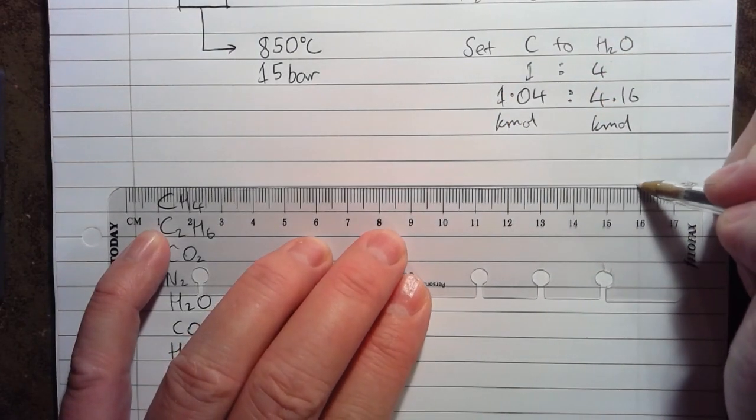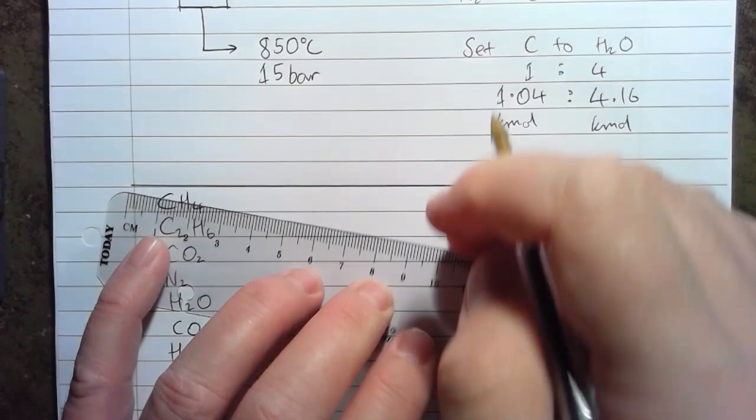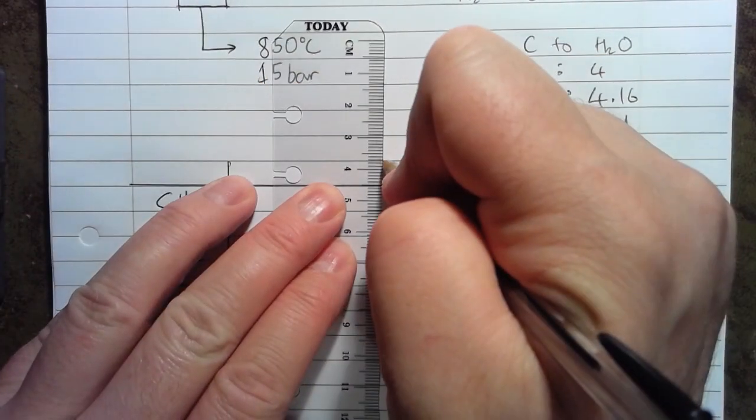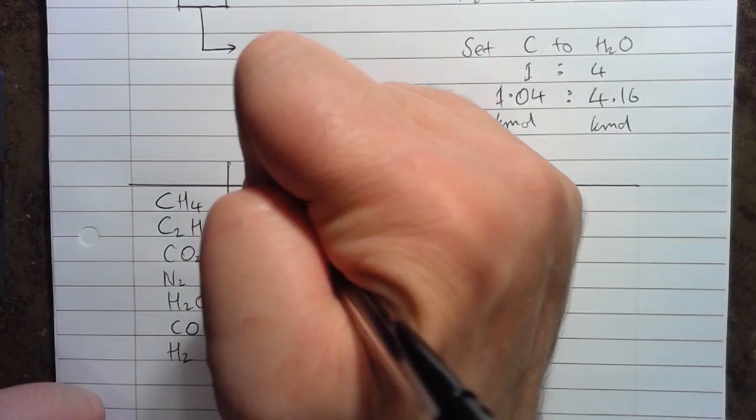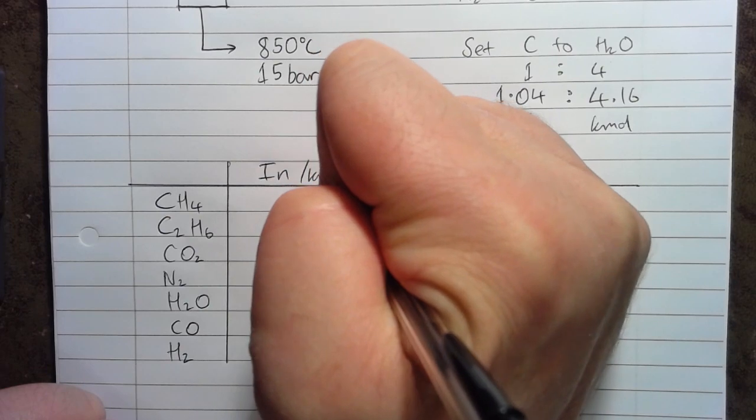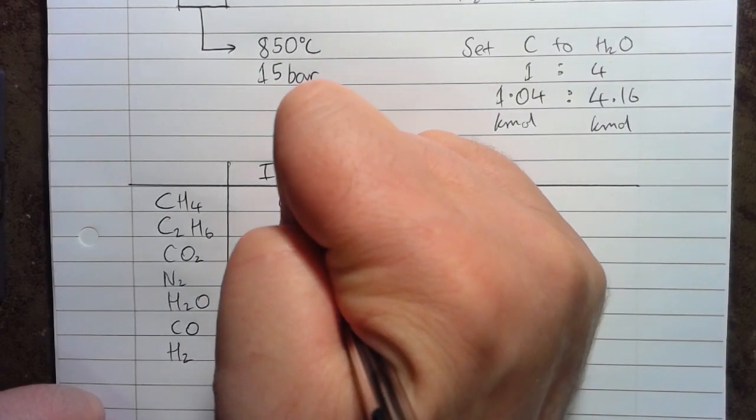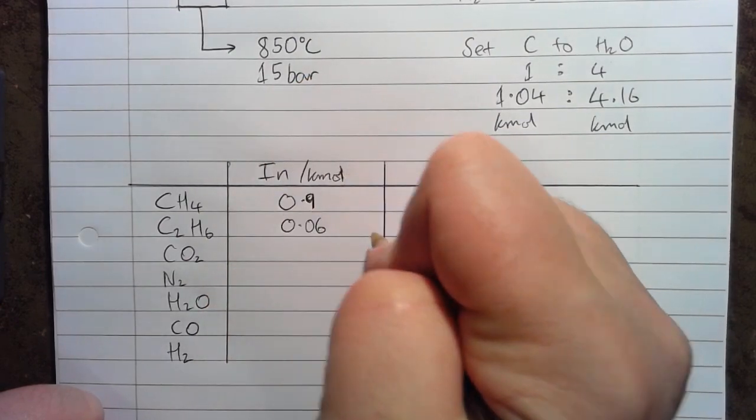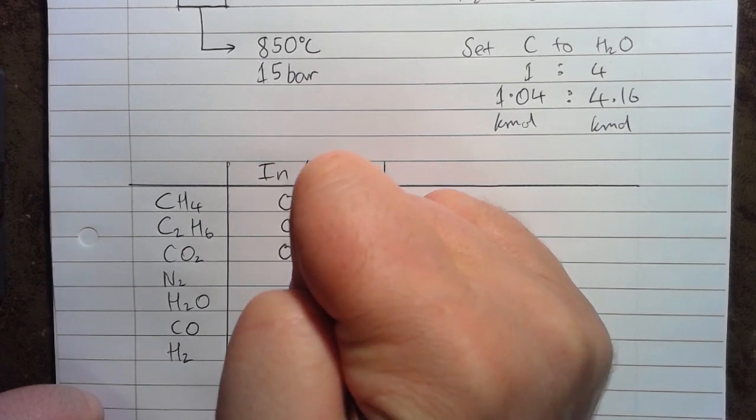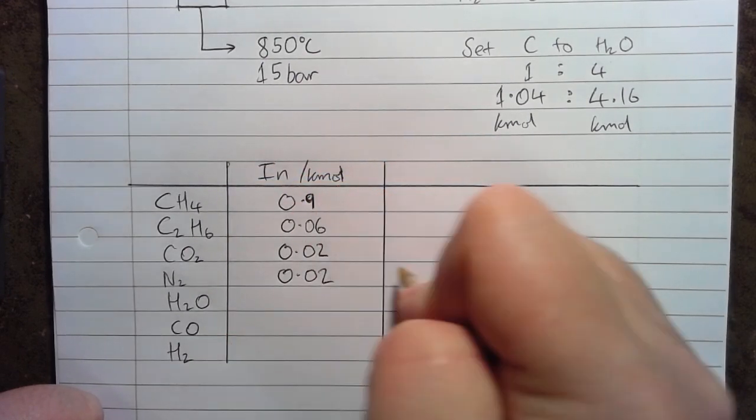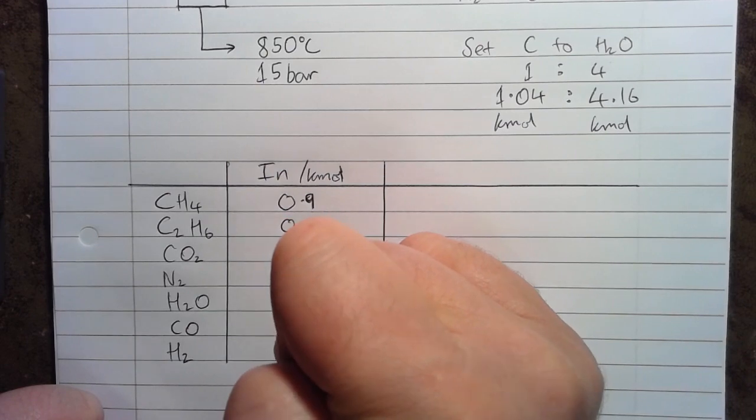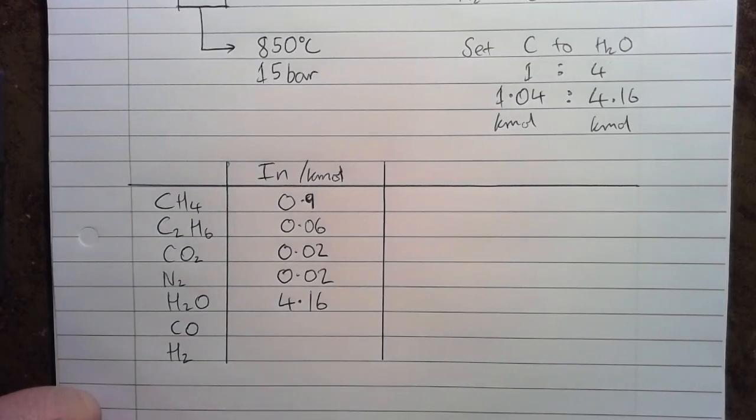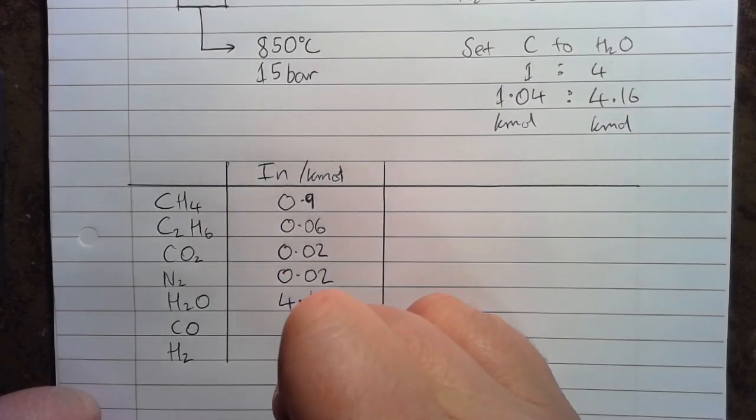We'll set this table up. In terms of what's coming in, we know we've got 0.9 kmol of methane, 0.06 ethane, 0.02 for both the CO2 and the N2, the water we've already worked out is 4.16. That's something we were given in the problem statement, and we know we've got 0 CO and 0 H2 coming in.